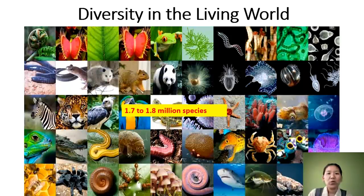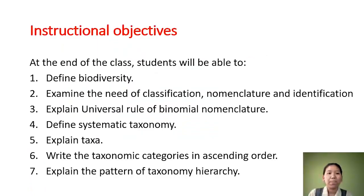Let us first look at the instructional objectives of this class. By the end of this class you'll be able to define biodiversity, examine the need of classification, nomenclature and identification, explain universal rules of binomial nomenclature, define systematics and taxonomy, explain taxa, write the taxonomic categories in ascending order, and explain the pattern of taxonomic hierarchy.